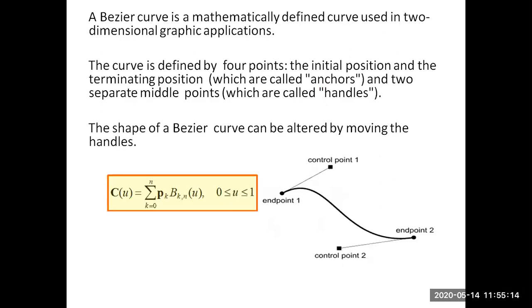The Bezier curve is a mathematical curve used in many 2D applications. The curve is defined by four points: the initial position and the terminating position, which are called anchors, and the two middle points, which are called handles or control points. The two end points — initial and termination — are called end points. The shape of the Bezier curve is very easy to alter by just moving these control points, called the handles.